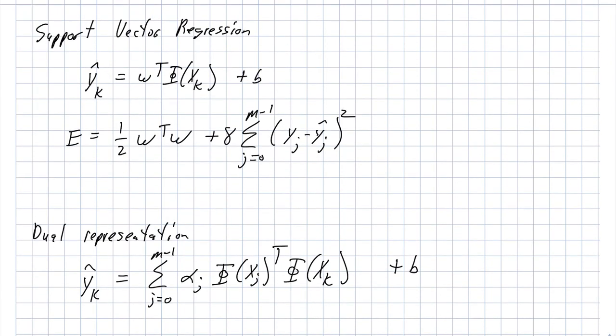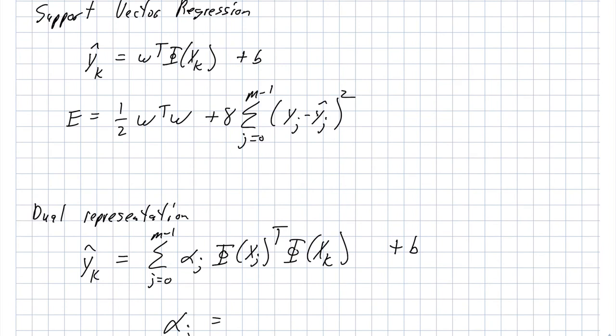So the new variable that gets introduced as part of the Lagrangian multiplier transformation is this alpha here, and in fact, there's one alpha for every training set element. And once one actually goes through the entire solution-finding process, so optimizing this function here, what we discover is that our alphas are equal to our errors, prediction errors, divided by gamma. So alphas and errors are specifically related to one another.